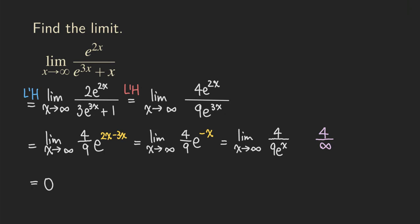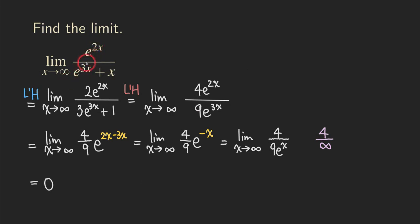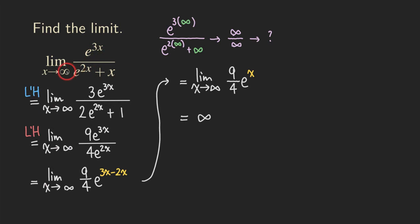So the limit exists for the second problem but not the first. Comparing the two: when the higher exponent (3x) is in the numerator, the limit diverges to infinity; when the higher exponent is in the denominator, the limit equals zero. It matters where you place the exponential functions. These two similar-looking problems have very different results. We'll do more problems next time — thank you for watching.